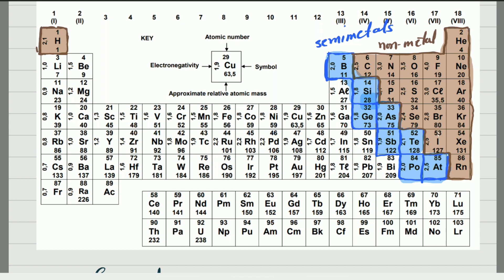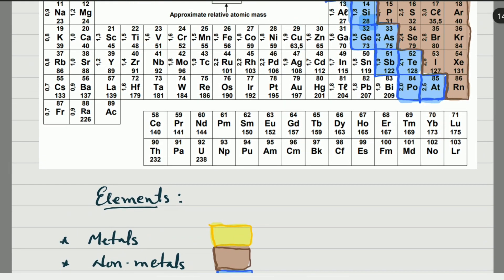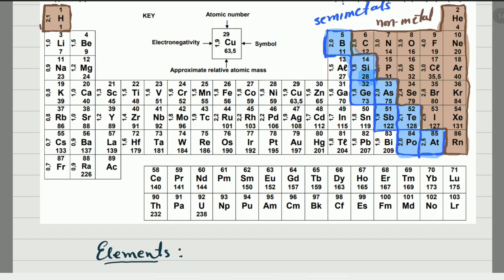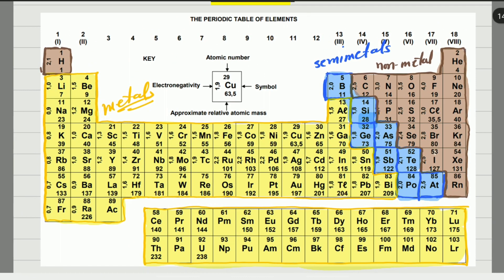All the other elements you see in the periodic table — which is a lot — are going to be the metals. For those, let's use yellow. The yellow is the color for the metals, the majority. I'm going to color all of them, including the two rows at the bottom. There we are — now we have the periodic table divided into metals, non-metals, and semi-metals.